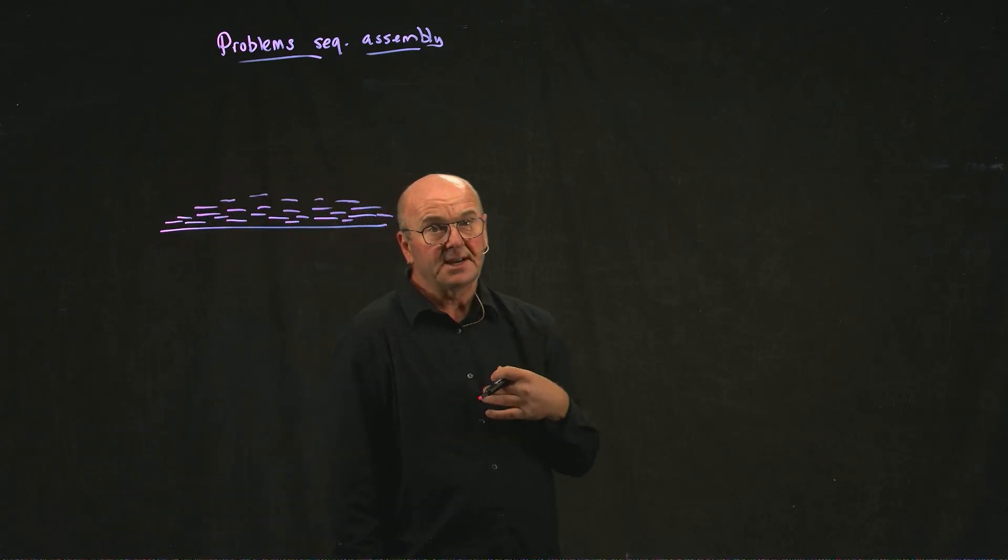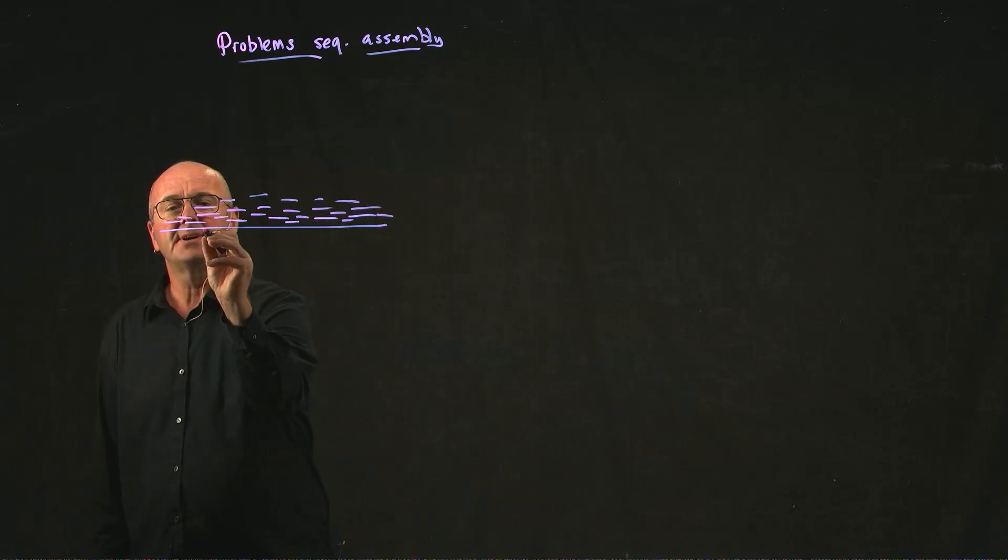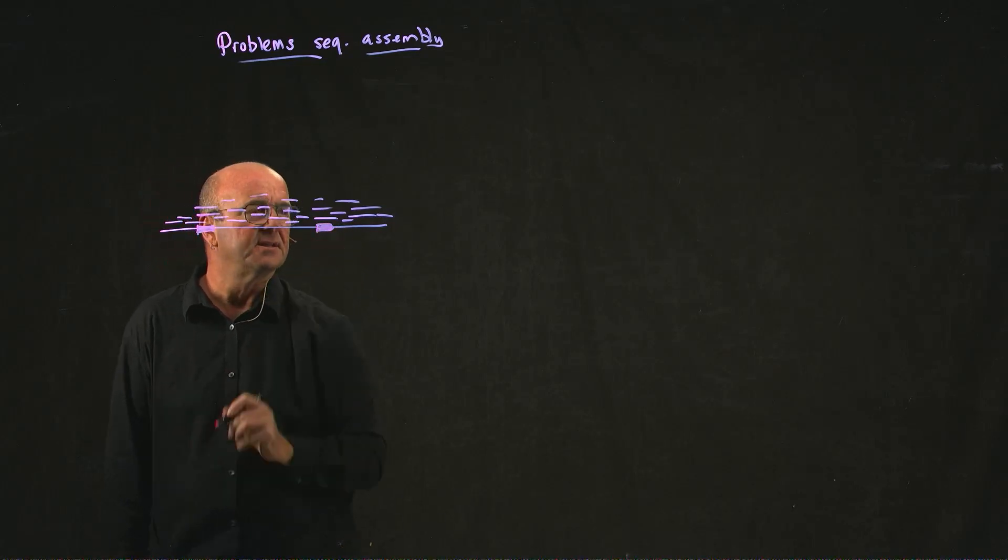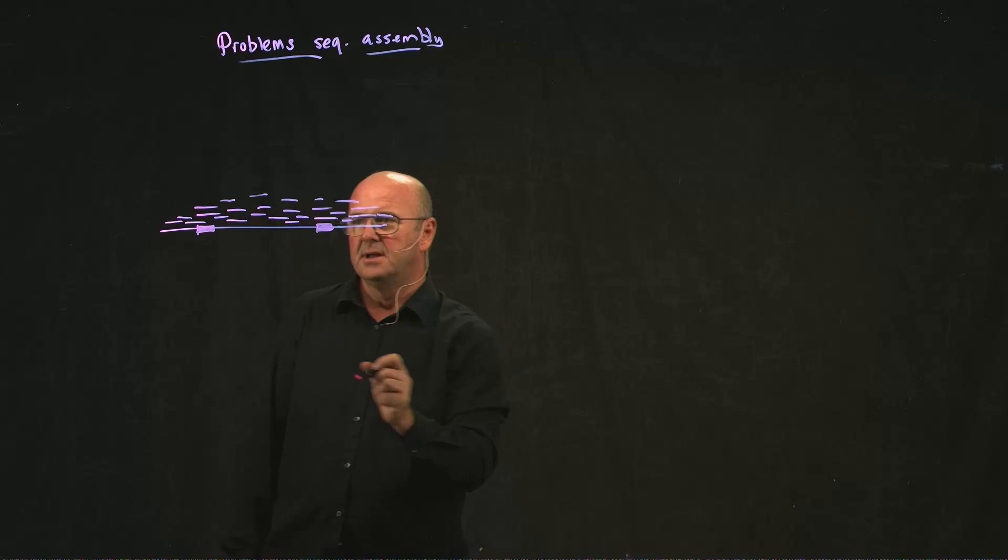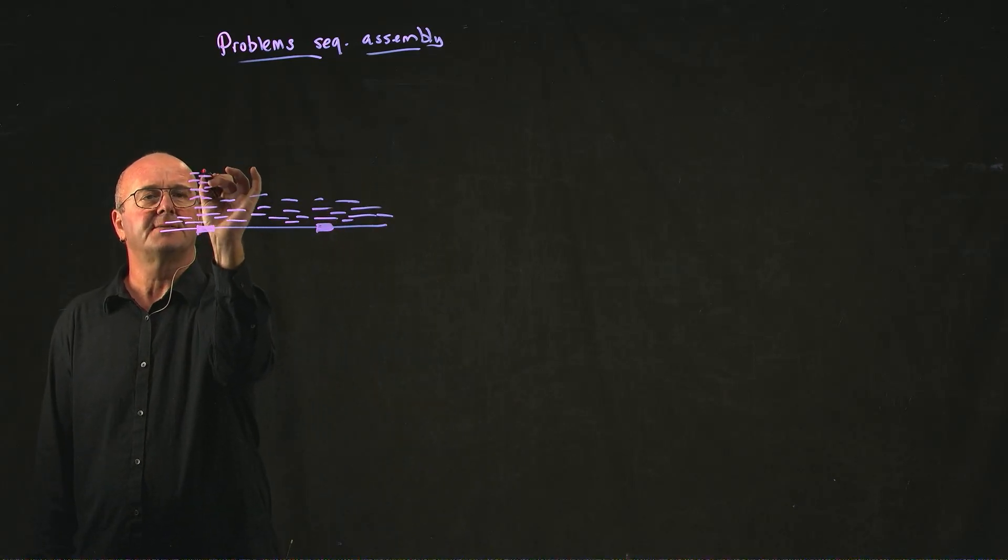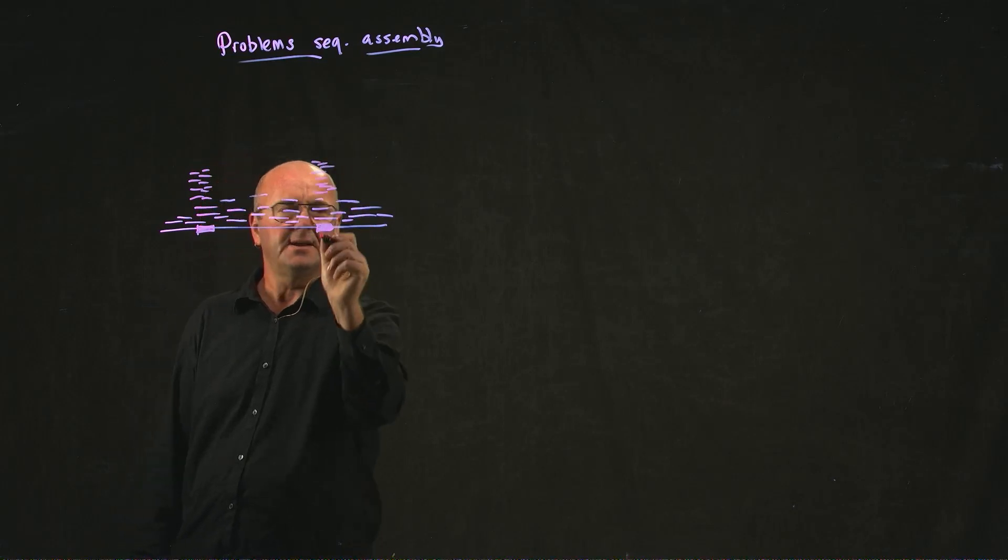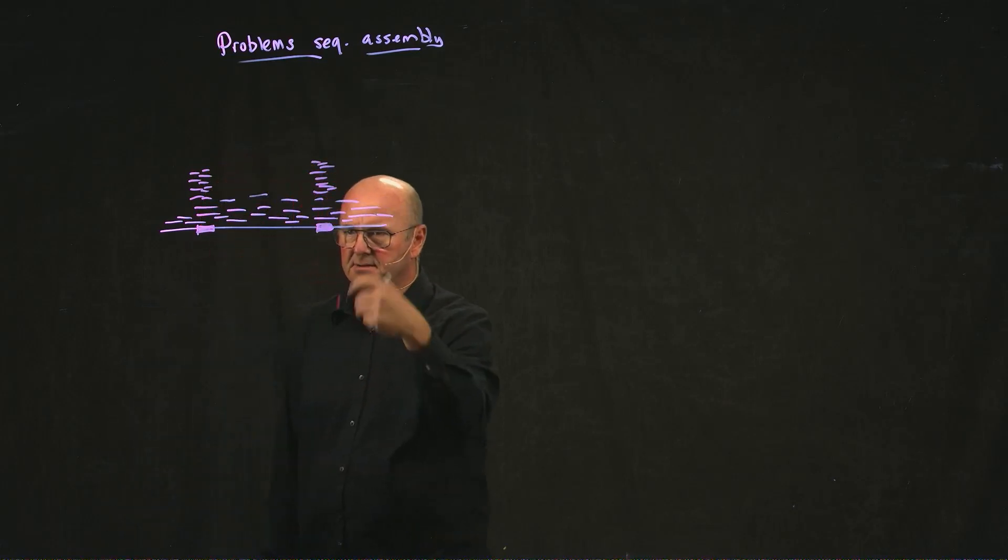And one of the problems that we have if we have too much data is, in fact, we have some regions. So imagine if you have a region that appears twice in the same genome and it's identical. What you're going to have at that region, you're going to have twice as much DNA there compared to everywhere else.